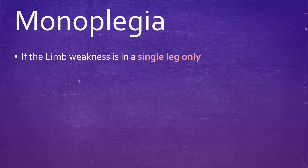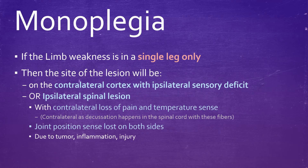If the limb weakness is in a single leg only, then the site of the lesion will be one of two points. It may be on the contralateral cortex with ipsilateral sensory deficit, meaning same-side sensory deficit, or it may be an ipsilateral spinal lesion, which comes with contralateral loss of pain and temperature sense. Joint position sense with this second option is also lost on both sides. Again, this may be due to tumour, inflammation, or injury.